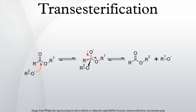The reverse reaction, methanolysis, is also an example of transesterification. This process has been used to recycle polyesters into individual monomers. It is also used to convert fats into biodiesel. This conversion was one of the first uses — transesterified vegetable oil was used to power heavy-duty vehicles in South Africa before World War II.